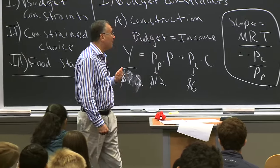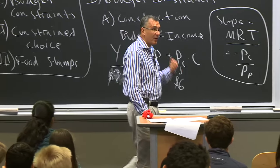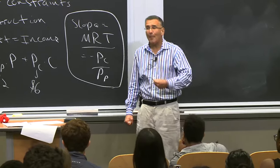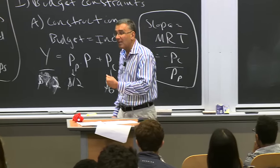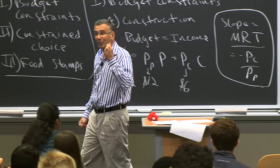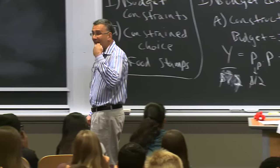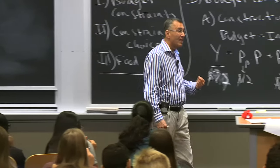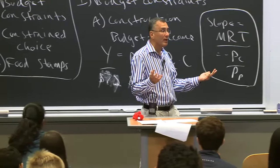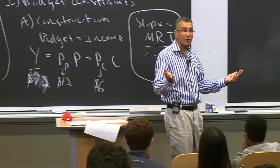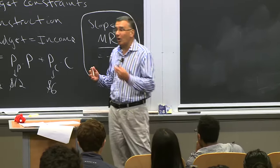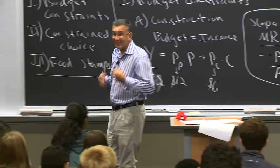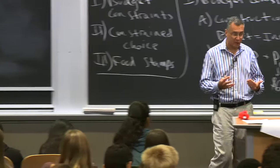This comes back to the key concept from the very first lecture: opportunity cost. The opportunity cost of a slice of pizza is two cookies. Remember, opportunity cost is the value of the next best alternative. Here you only have two alternatives — pizza and cookies — so the opportunity cost of a slice of pizza is two cookies, and that's the sense in which you're transforming pizza into cookies or cookies into pizza.